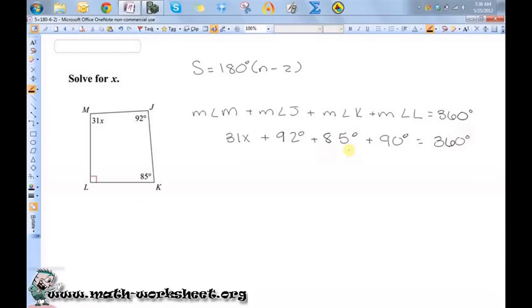If I add all these values up, I get 267. So 31x plus 267 equals 360.